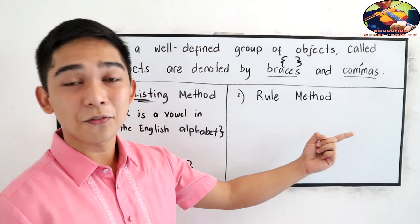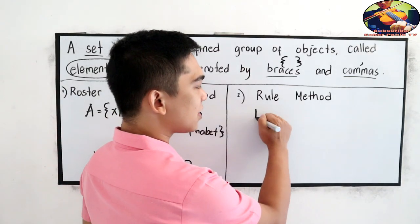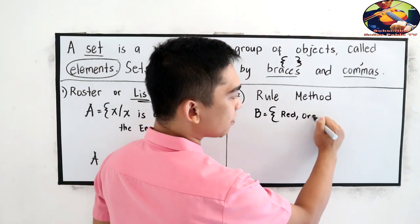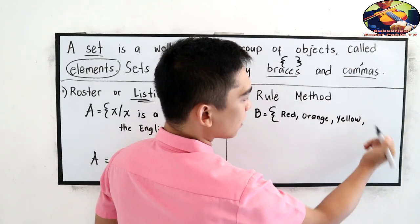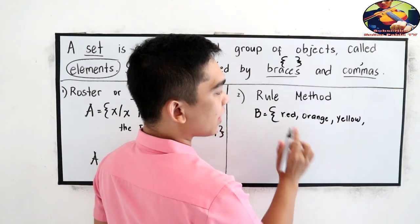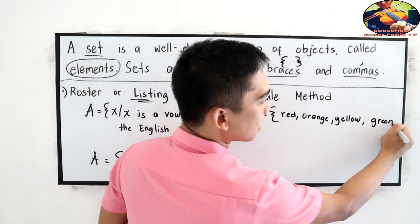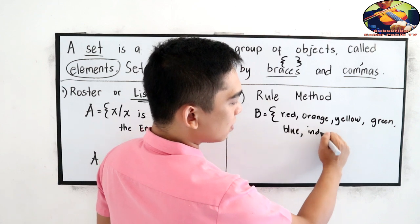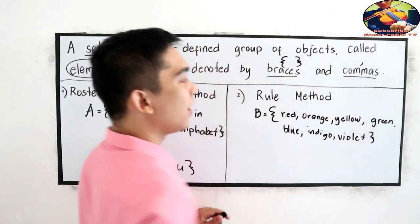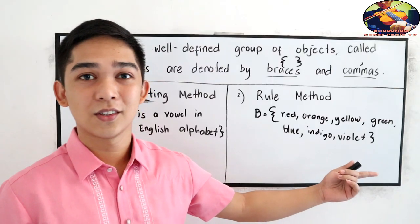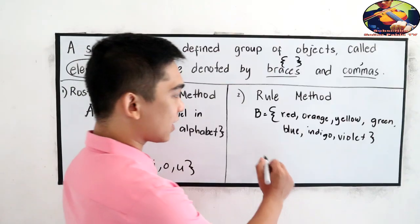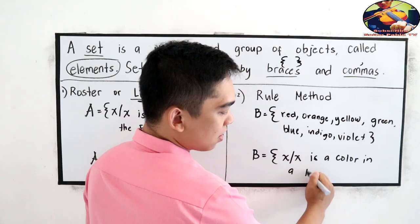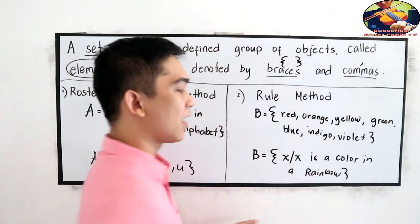Now let us proceed to the rule method — the second way to define our set. Let's say set B is equal to red, orange, yellow, green, blue, indigo, and violet. We know that these are the colors in a rainbow. So using the rule method, we write: B is equal to x such that x is a color in a rainbow. This will be our rule.